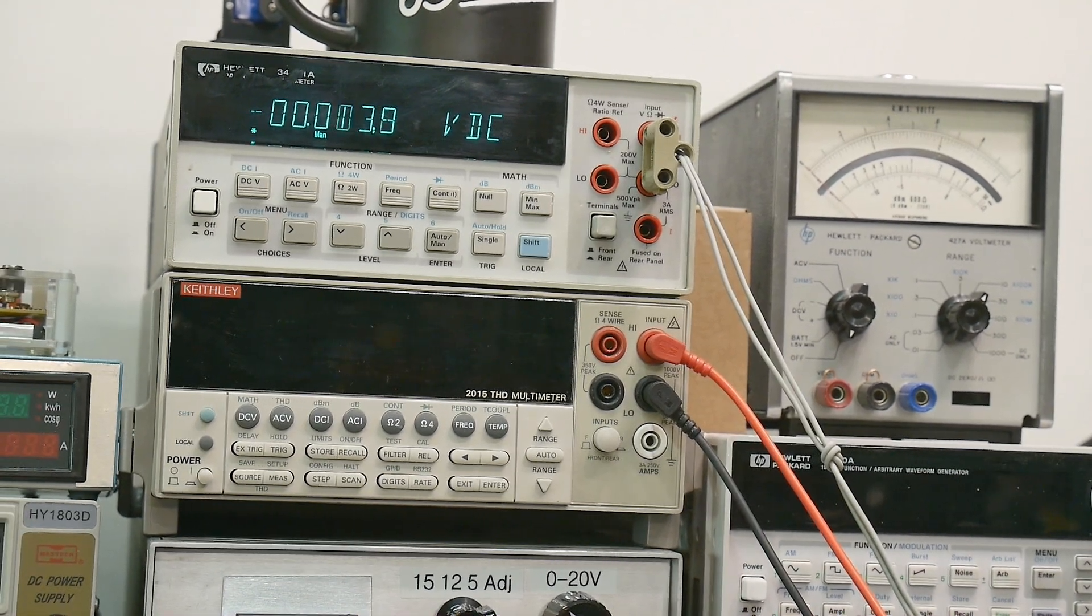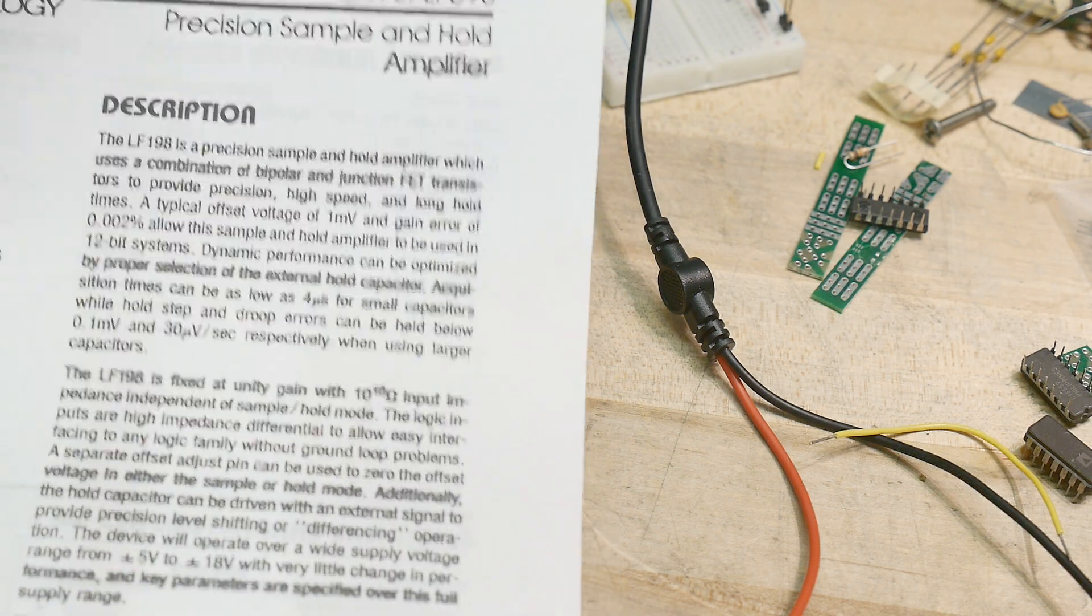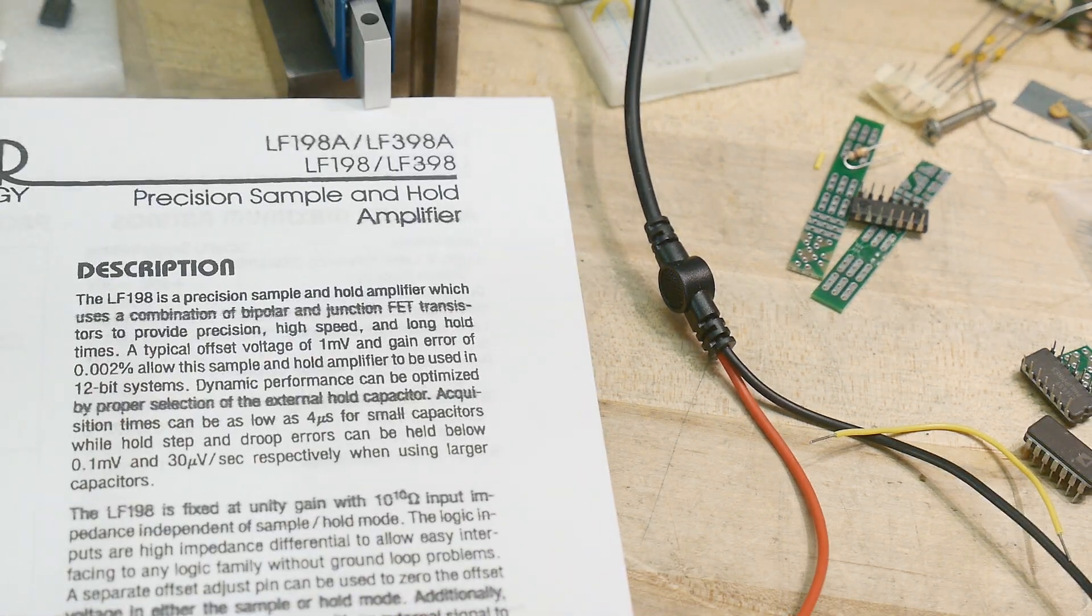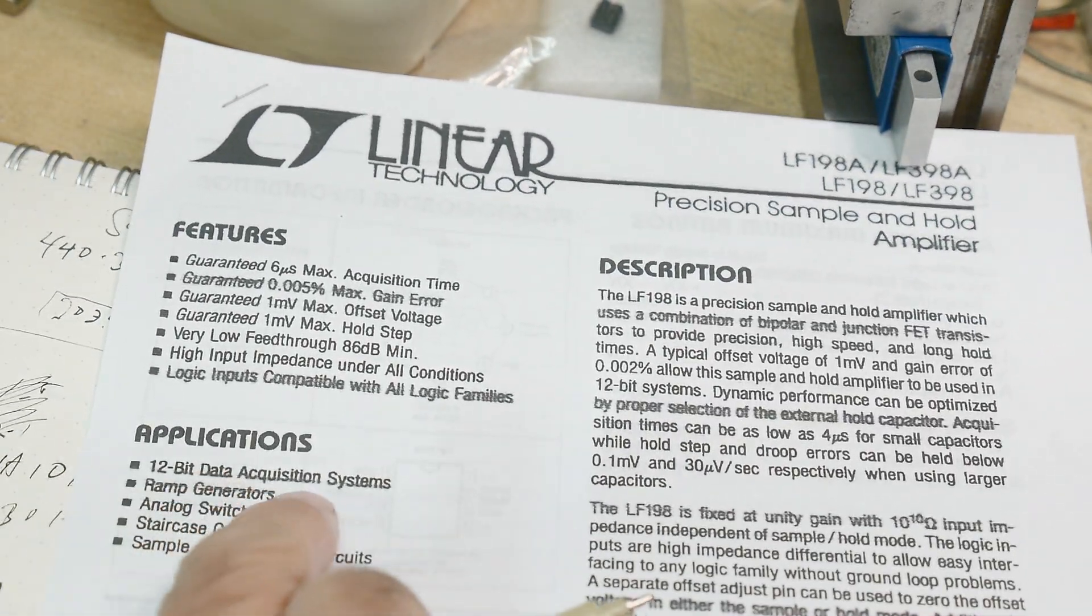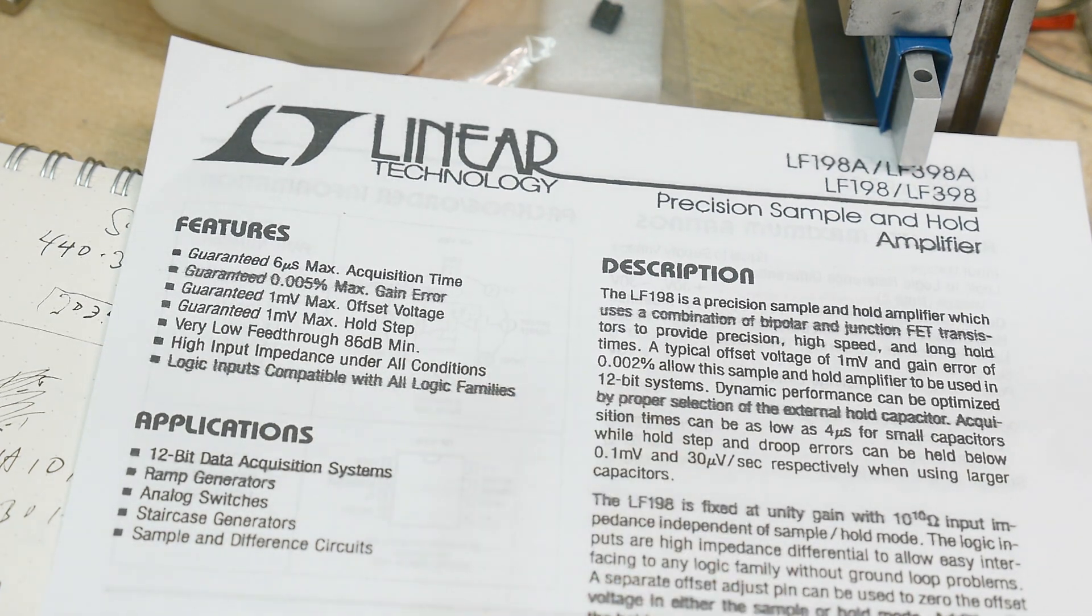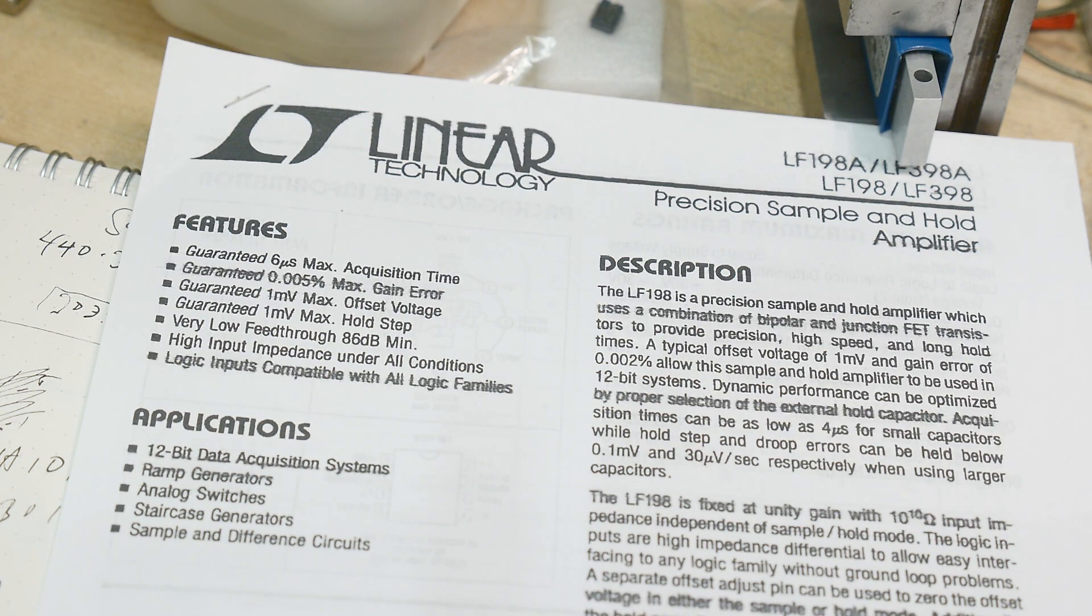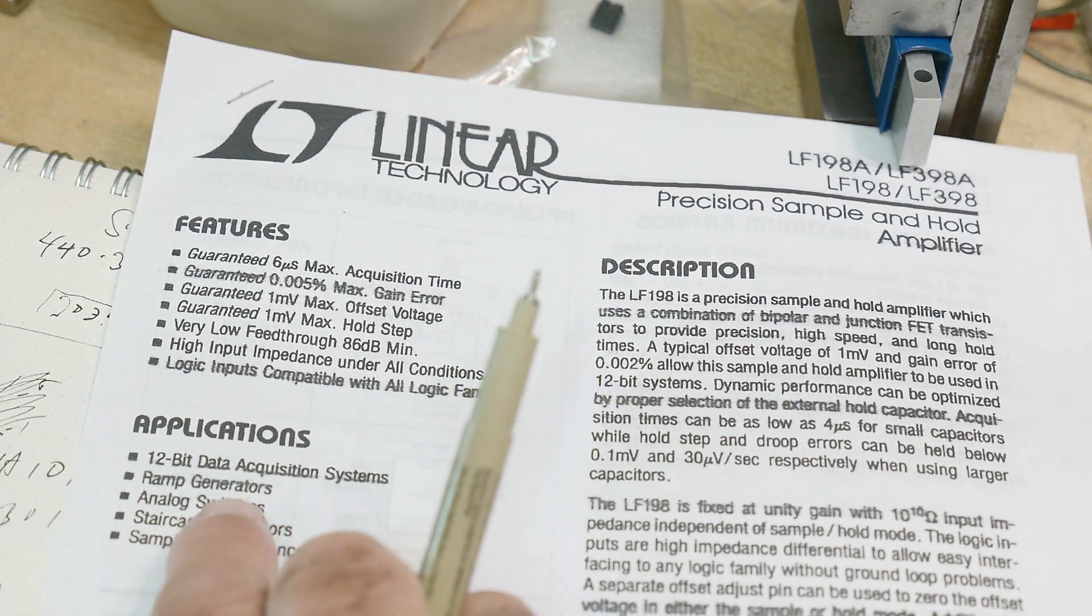So anyway, why would you use this thing? What would you do with it? There are applications on every data sheet. So people use this for 12-bit data acquisition systems. So a lot of times you'll want to measure voltage, but 12 bits, it takes some time to read that. And so you'll need to store that voltage while you're reading it for 12-bit data acquisition. A ramp generator, you can use that capacitor to do the ramp.